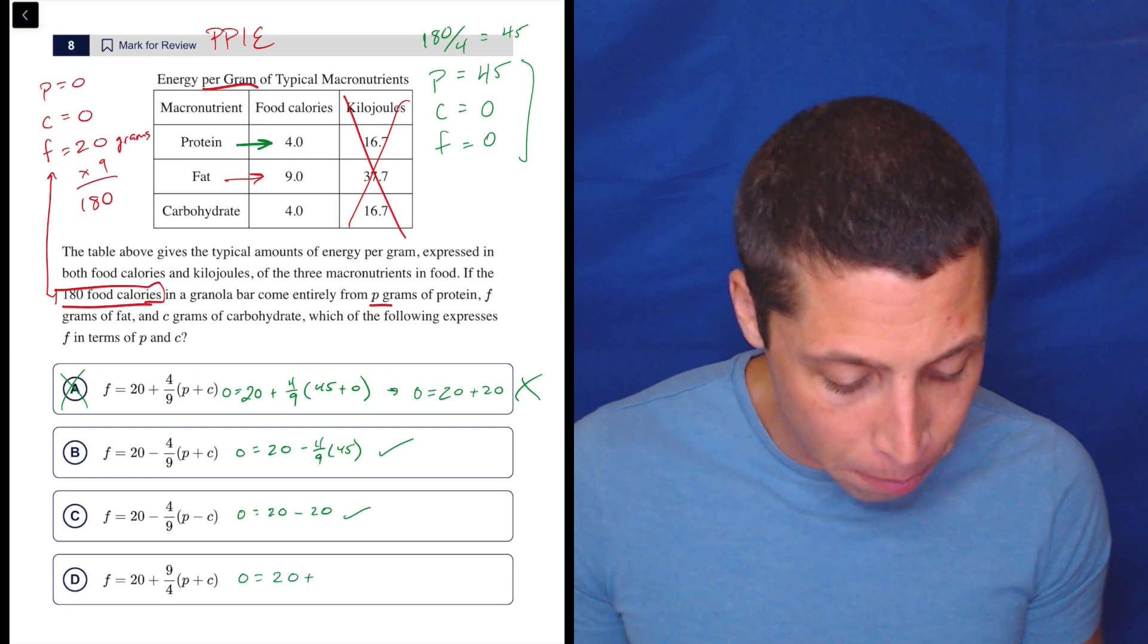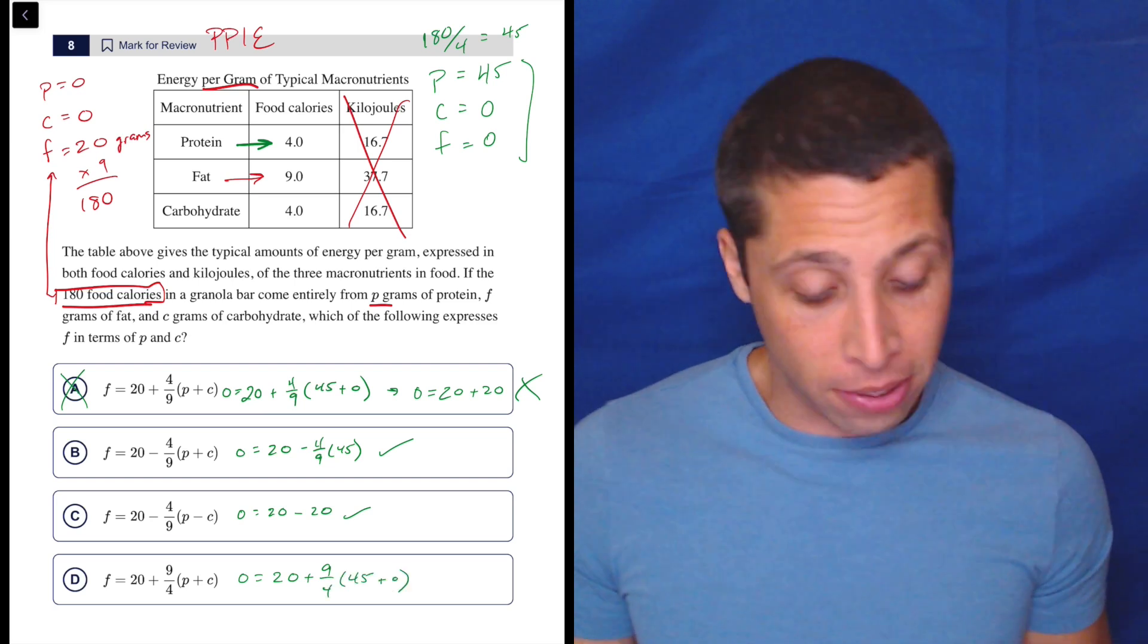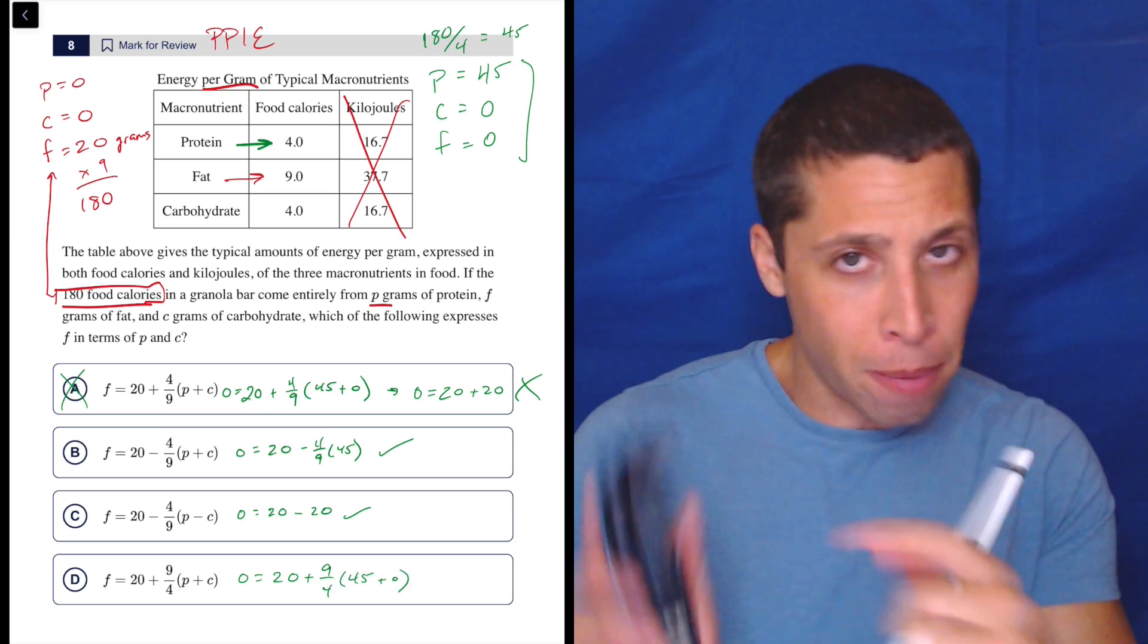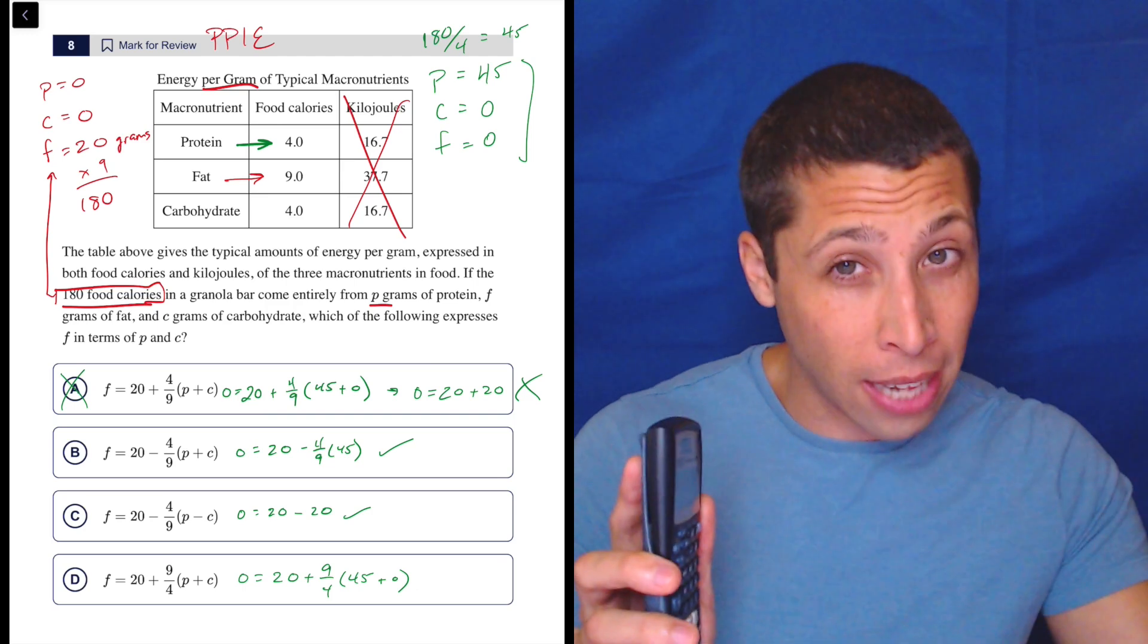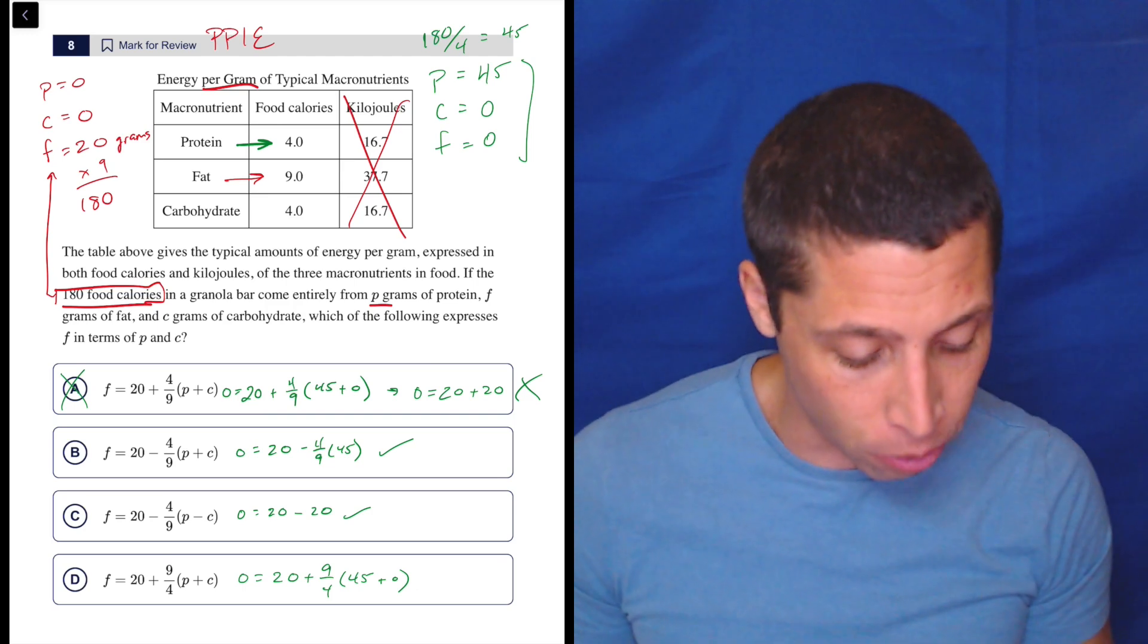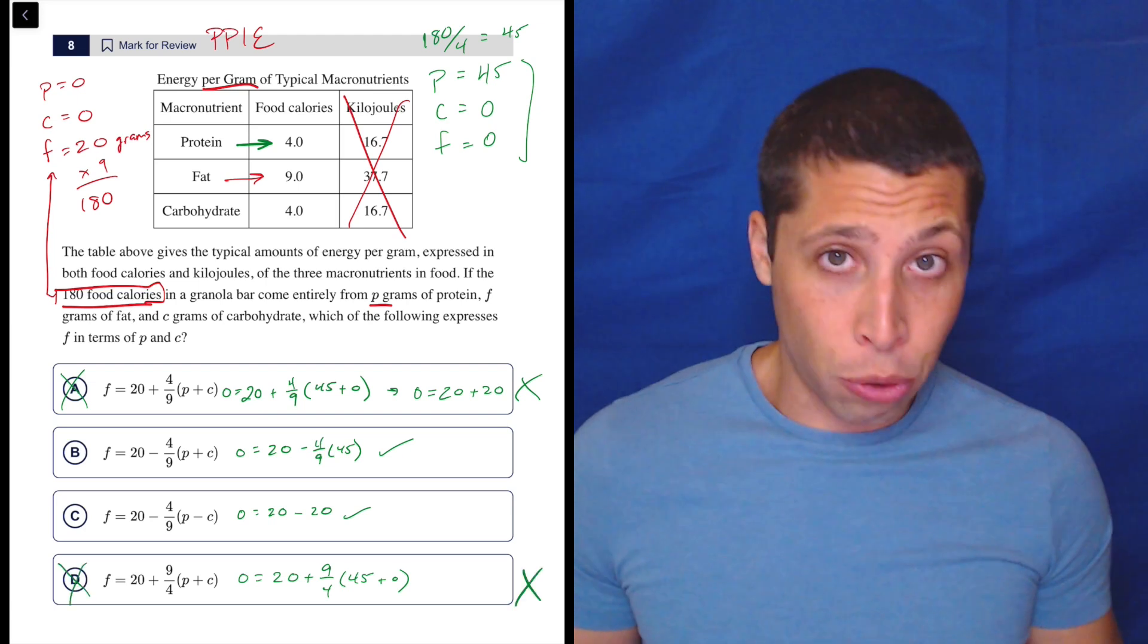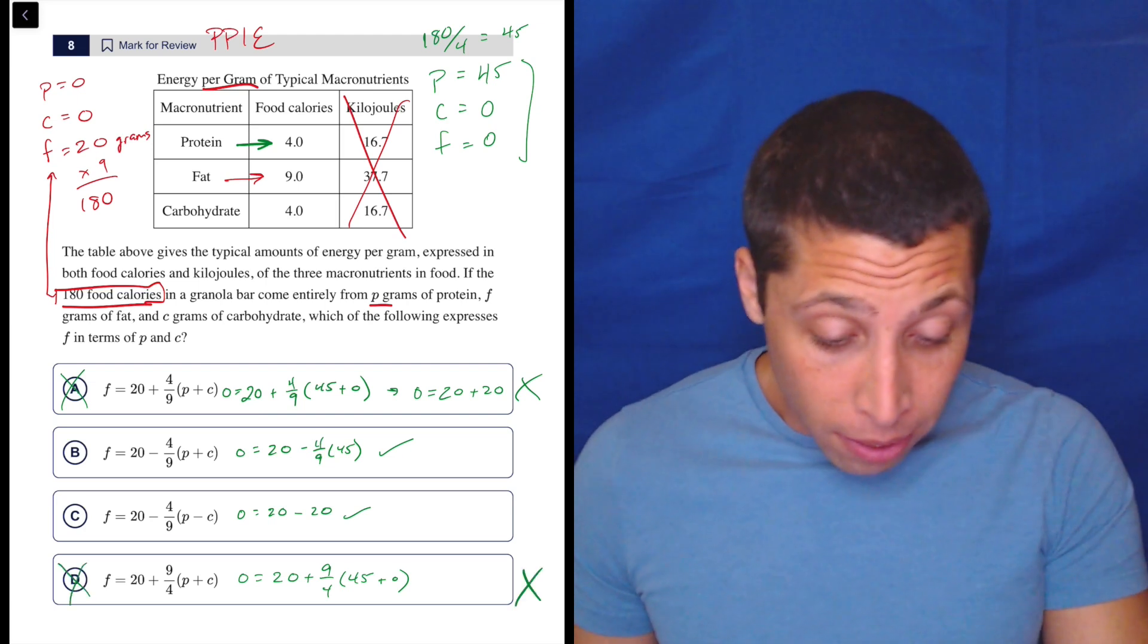But same thing can happen now with a couple other choices. This is going to be 20 minus 20 because it's four ninths of 45 again. And that'll work. And then this though, will be zero equals 20 plus nine fourths of 45 plus zero. So I could do the math, but already I know there's a plus. That's not going to work. Plus nine fourths of 45 is going to be bigger than 45. So this isn't going to work either. This isn't going to give me the zero that I want. So just like that, we're down to two choices.